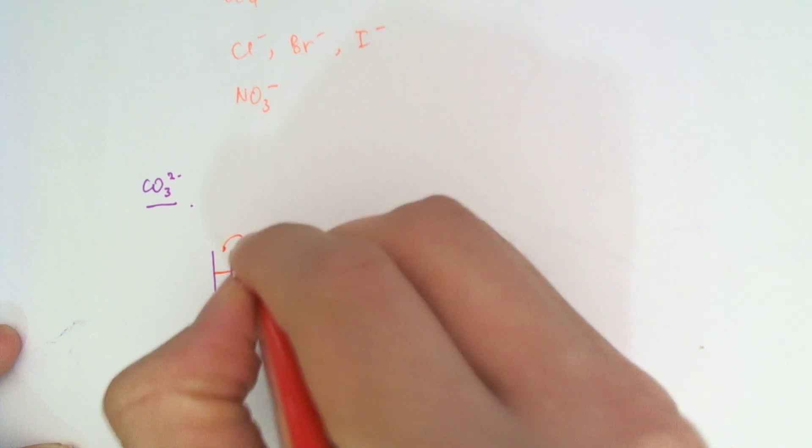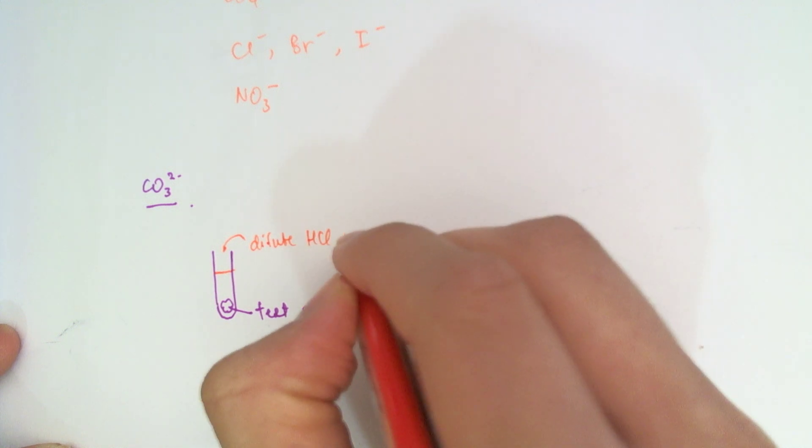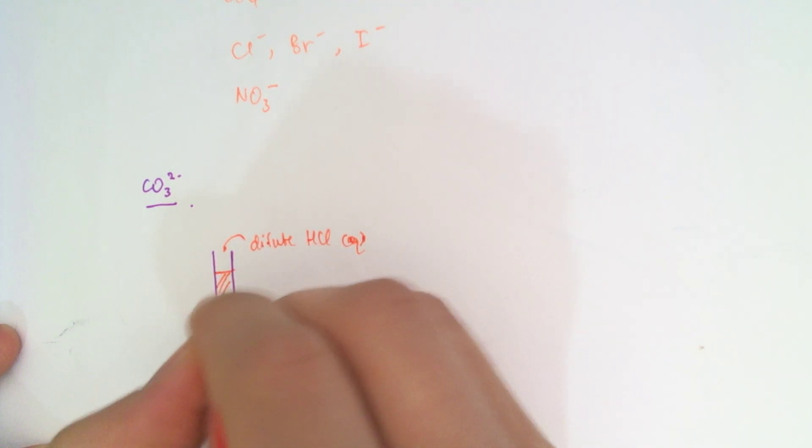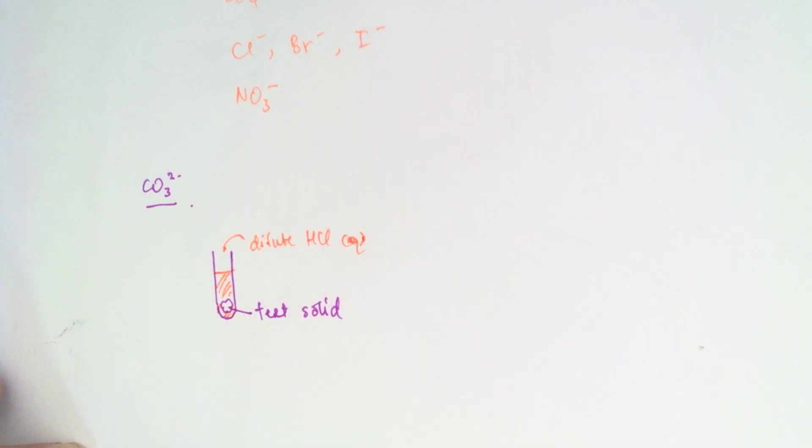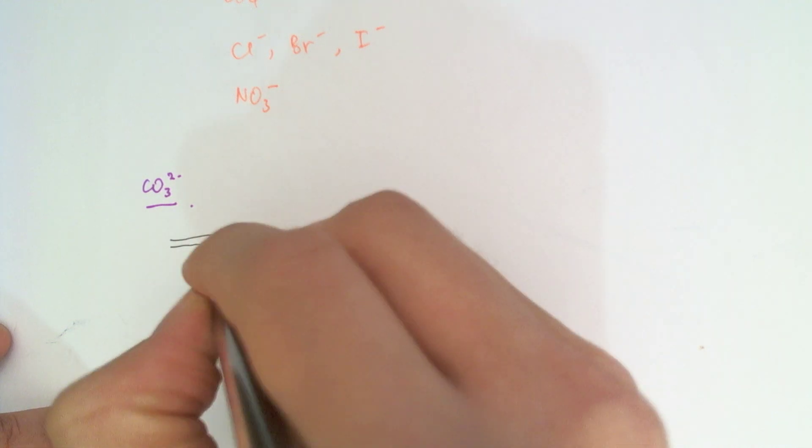And what I'll do now is I'll pour in some dilute hydrochloric acid, some dilute HCl aqueous into this. And if you see a gas being released, if it effervesces, what I'm going to do is take that gas and let's put on a cork here.